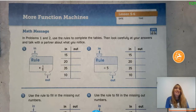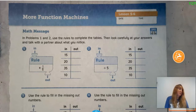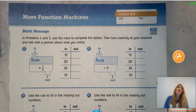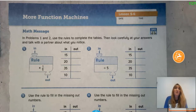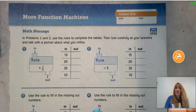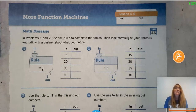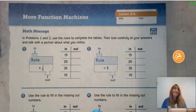Hi and welcome back. We are on EDM 5.6 and today we're going to focus on the multiplication of fractions and whole numbers. We're also going to look at some function machines, so you will need math journal page 169. Our math message says: in problems 1 and 2, use the rules to complete the tables, then look carefully at your answers and talk with a partner about what you notice.